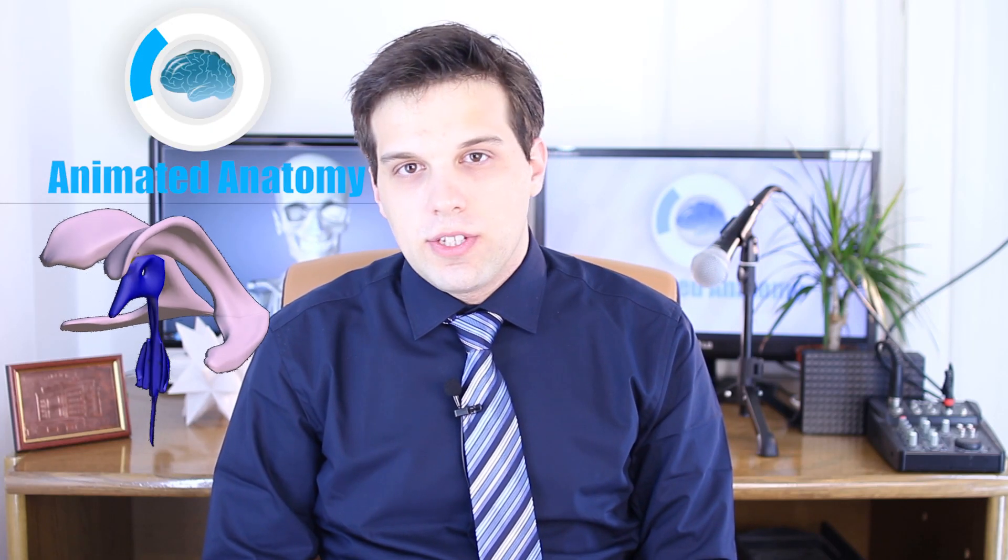My name is Faris and this is Animated Anatomy. In this video I will illustrate the brain ventricles. There are four brain ventricles: the left lateral one and the right lateral one, the third one and the fourth one. They're all connected and quite easy to illustrate. So let's start.